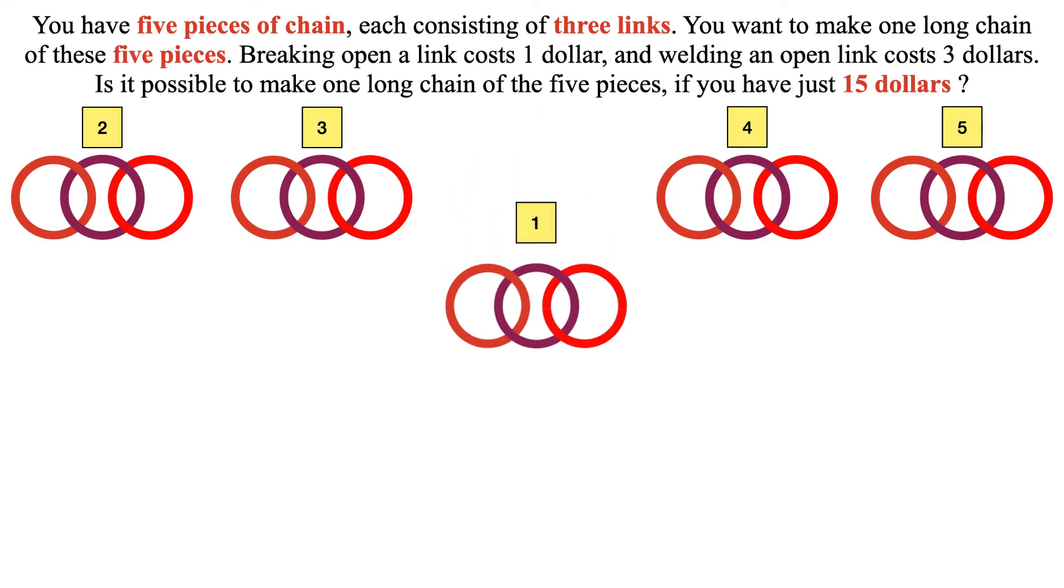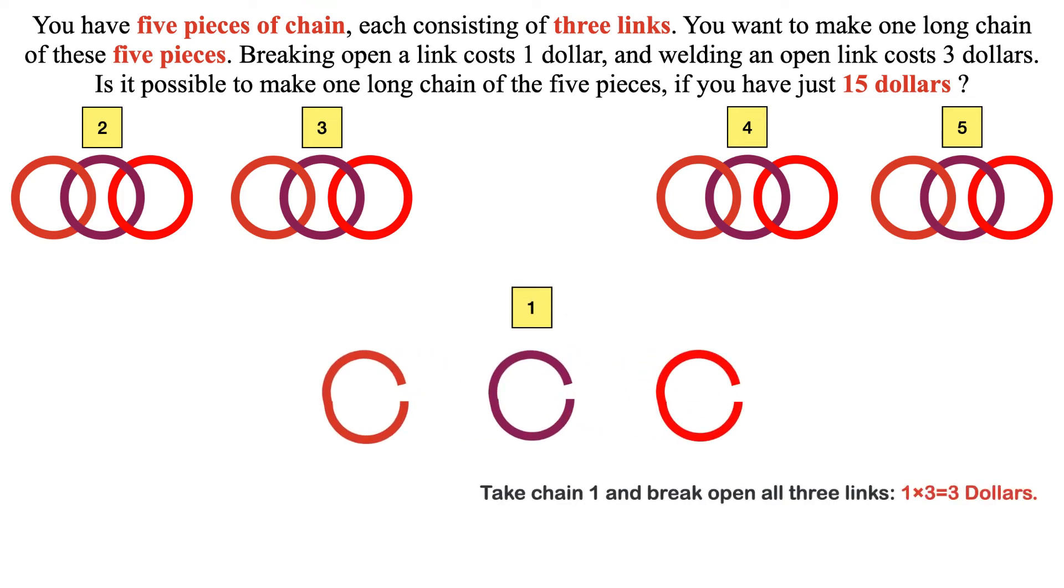Let us name the chains as 1, 2, 3, 4, 5, each having 3 links. Now take chain 1 and break open all 3 links, and this will cost you 1 times 3, which is equal to $3.